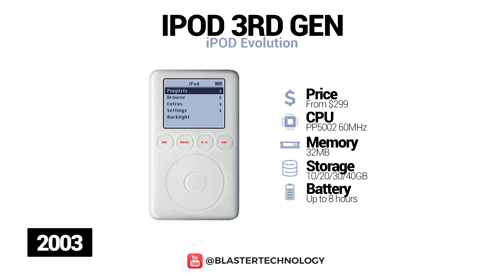The third generation iPod was completely redesigned, being thinner, with new software, games, and an alarm clock. These models no longer had FireWire; a new dock connector was introduced, the mechanical scroll wheel was changed to a touch version, and the control buttons were positioned at the top of the wheel. It had a battery life of up to 8 hours and was available in 10GB, 15GB, or 30GB.